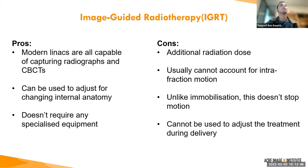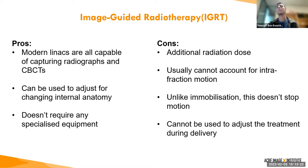Some pros of IGRT: it's widely available — all linacs are capable of capturing radiographs and cone beam CTs. It can be used to image the internal anatomy, which immobilization alone cannot do. It doesn't require any specialized equipment for most use cases, though more advanced IGRT techniques may require specialized equipment. A con is that it delivers additional radiation dose to the patient, which limits how much imaging you can do before that radiation becomes harmful.